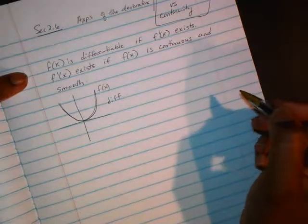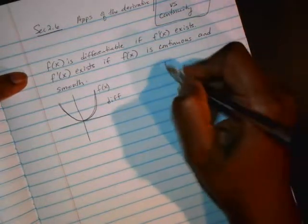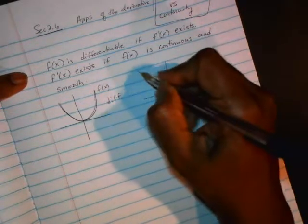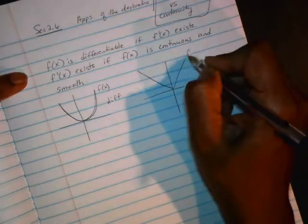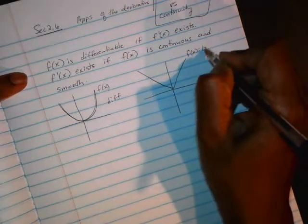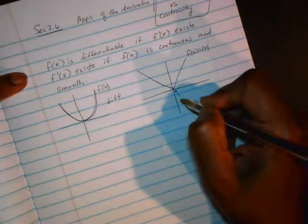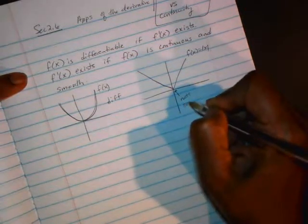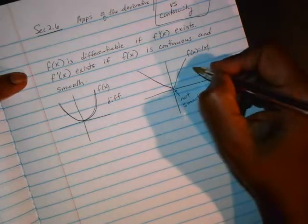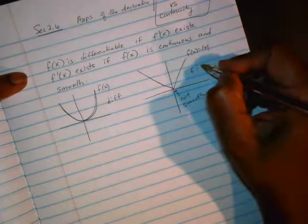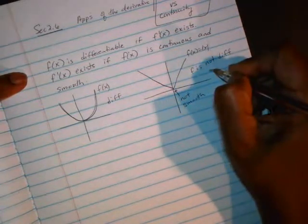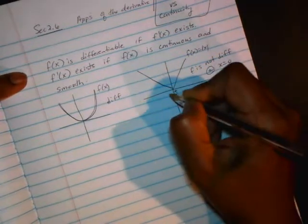We'll use the word DIFF for differentiable. On the other hand, if you take a look at the absolute value function, f(x) equals absolute value of x, it's not smooth there. It's got a sharp turn. Not smooth.